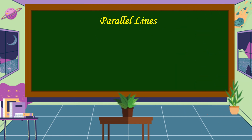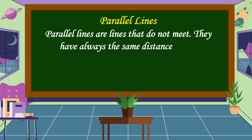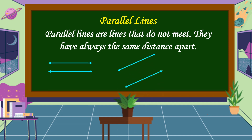What do you mean by Parallel Lines? Parallel Lines are lines that do not meet. They always have the same distance apart. These are some examples of Parallel Lines.